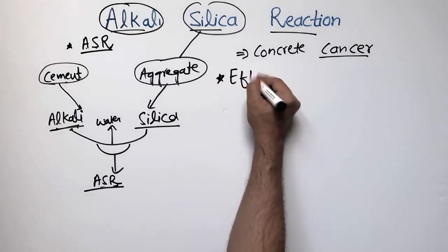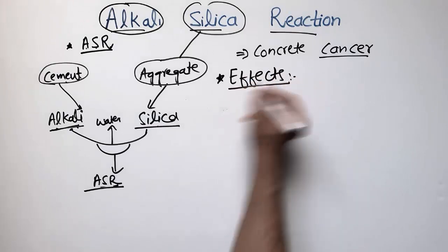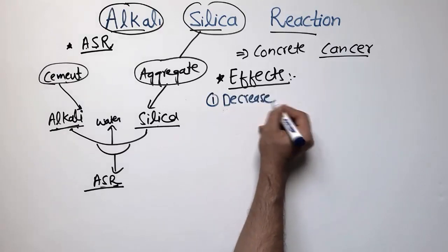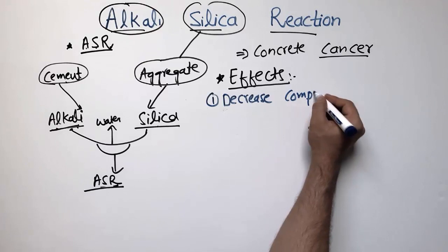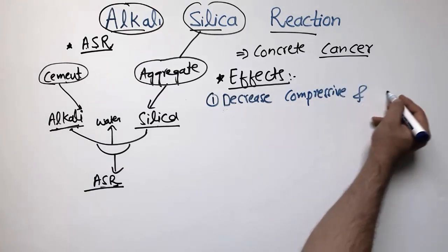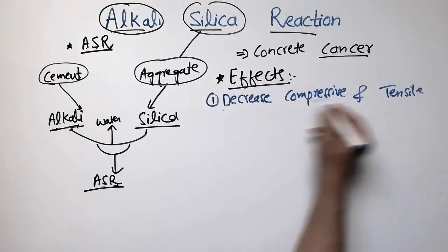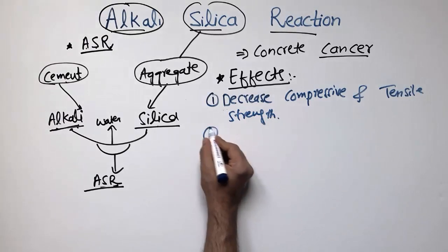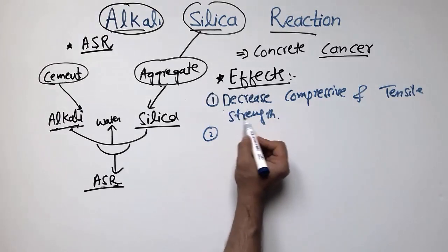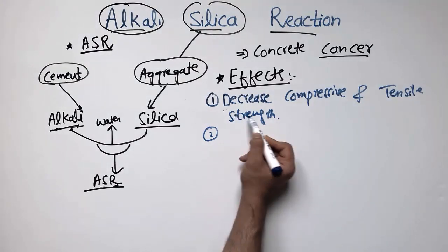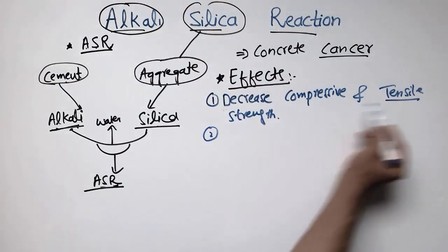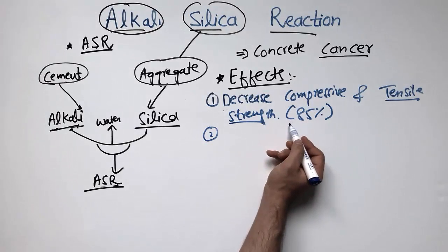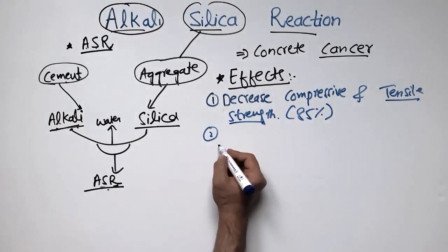Now let's discuss the effects of the alkali silica reaction on concrete structures. The first effect is that it decreases the compressive and tensile strength of the concrete. This is very important to know — it reduces tensile strength by as much as 85%, which is extremely significant, so we must avoid this ASR reaction.